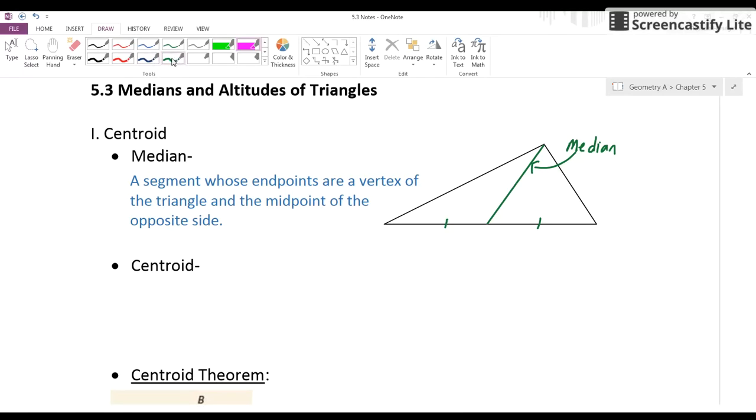So then the centroid is going to now be our point of concurrency of the three medians. You can take each vertex and connect it to the midpoint of the opposite side to create what we call the centroid. So let's go ahead and write that down next.